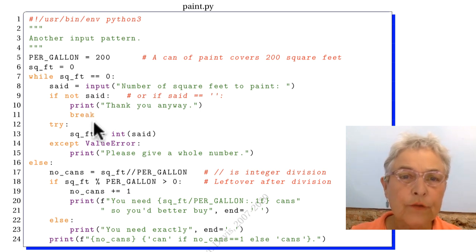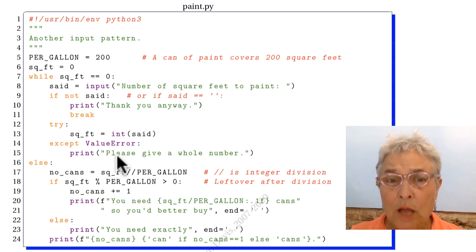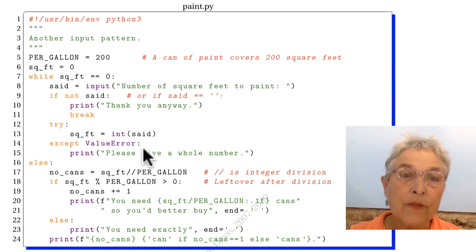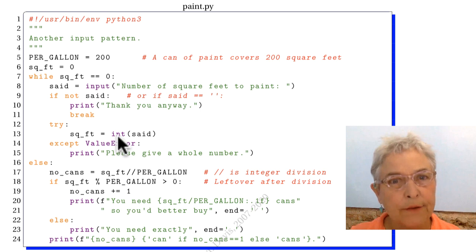Then we take the integer form of what was given to us. We get the ValueError if this call to int failed. But if this call to int failed, that point where the square feet label is attached to that integer object never happened. And then we ask, please give a whole number, and we still have square feet equals zero. So we go around until either they give us nothing, or they give us a good number that I can make an integer out of.